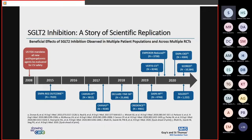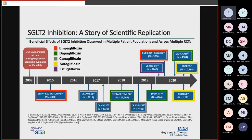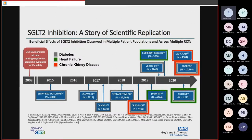This slide, already slightly out of date, gives a sense of how many trials there have been with SGLT2 inhibitors and their scale. Different agents — dapagliflozin, empagliflozin, and others — have shown remarkably similar benefits across groups. Studies started in diabetic populations but the benefit has branched out to heart failure populations, chronic kidney disease, and populations with both diabetes and either heart failure or CKD.